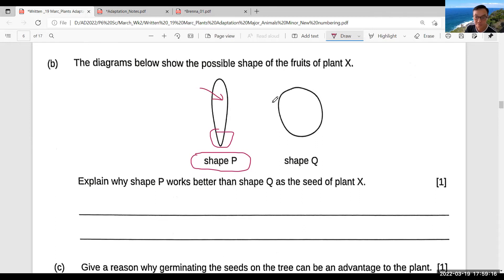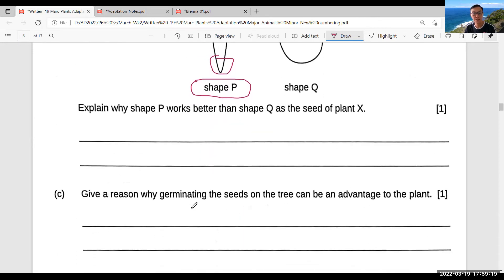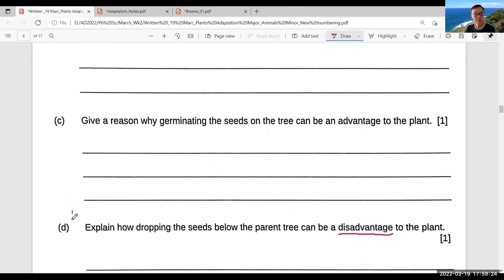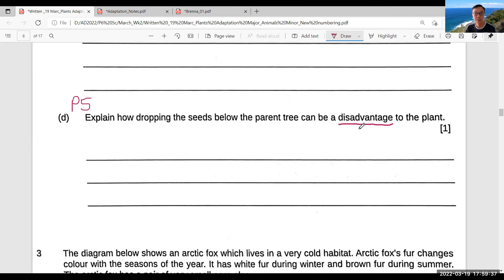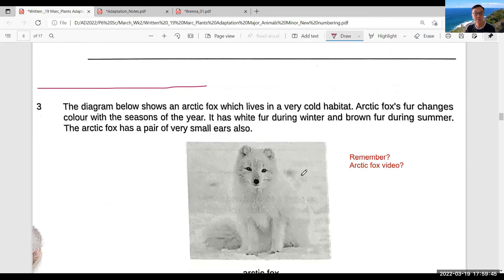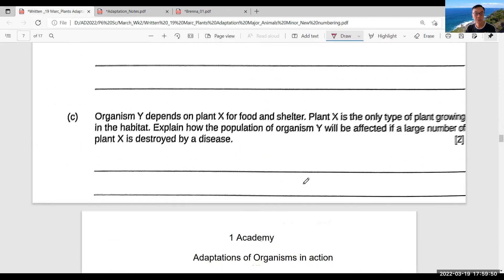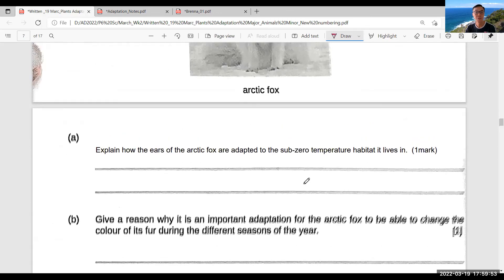Then you answer the next question, part C and part D. Part D, remember this question is related to P5 about overcrowding and competition with the parent plant. To answer these two questions, next week I will go through the answer with you. For question three, arctic fox, and number four, I'm going to try number three and number four yourself.